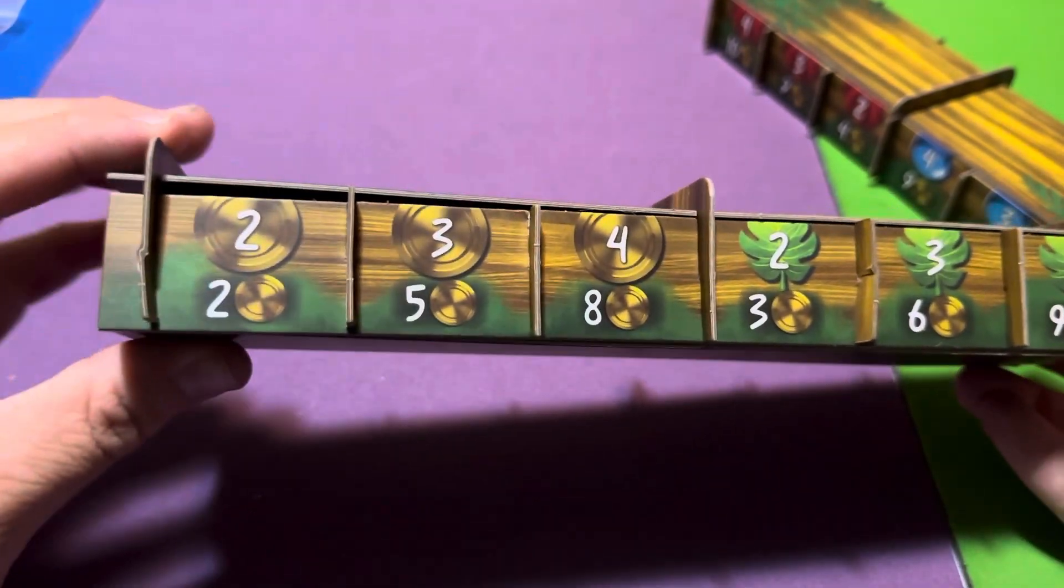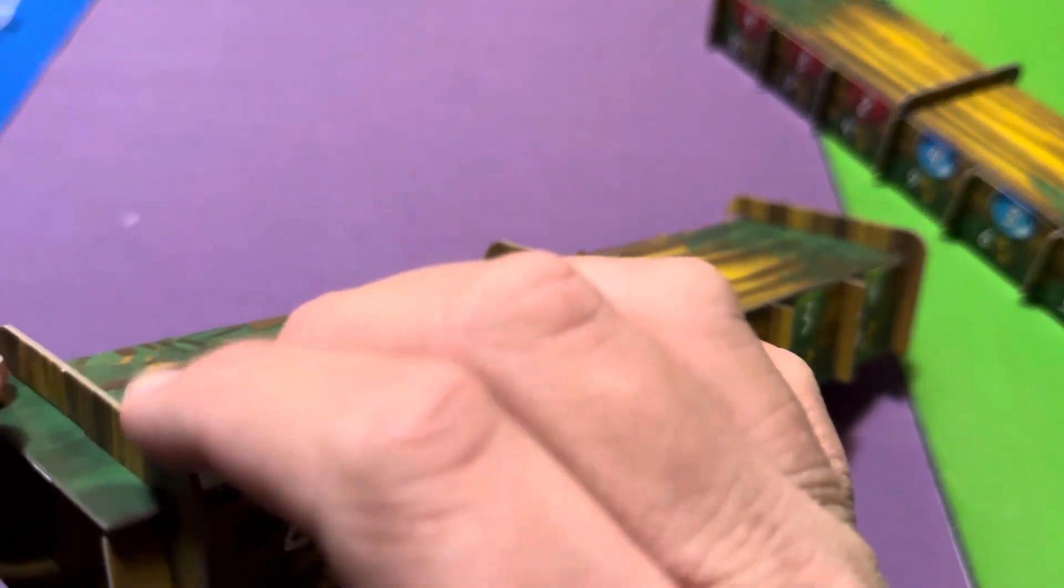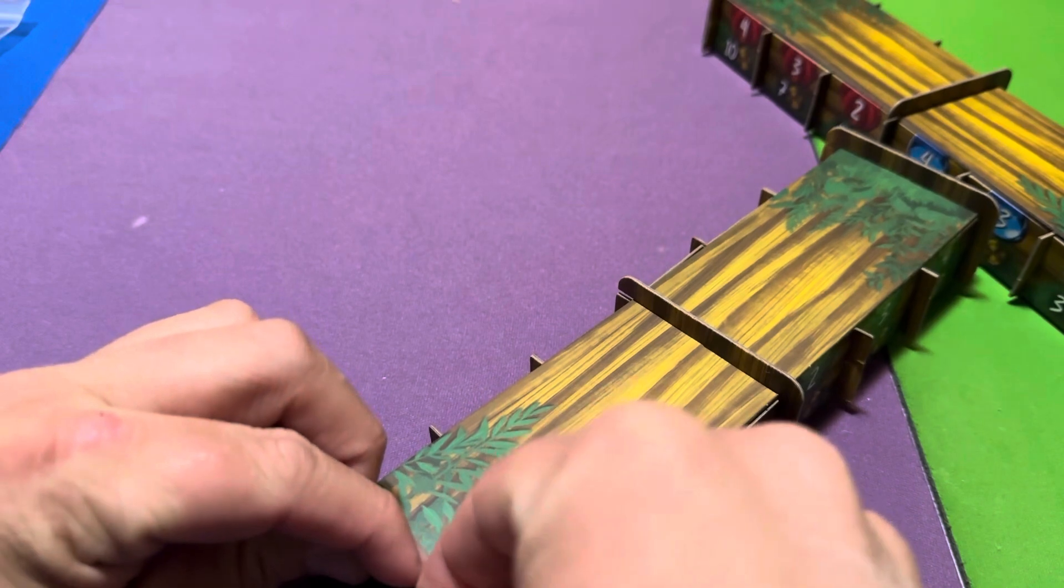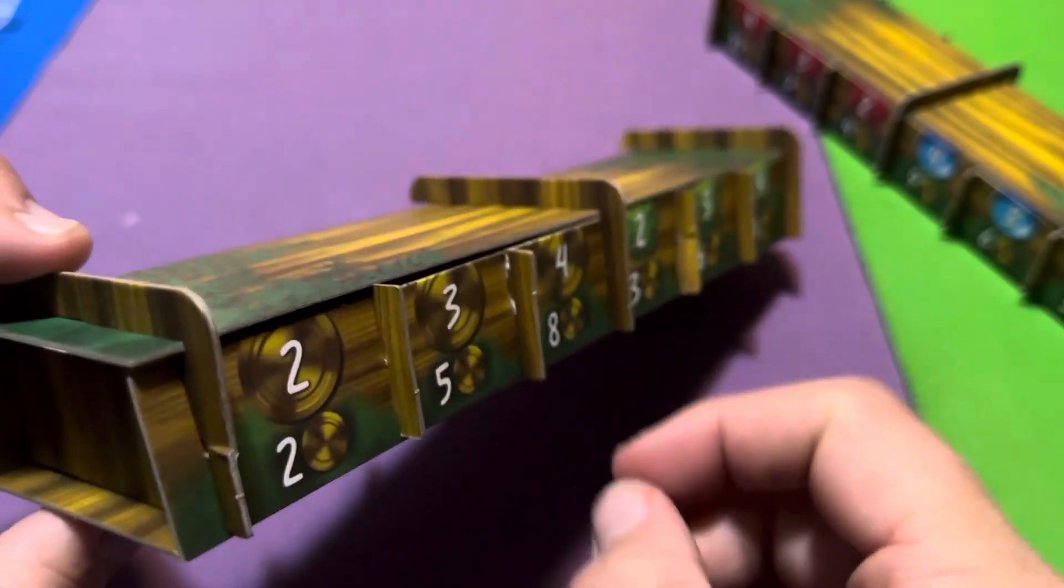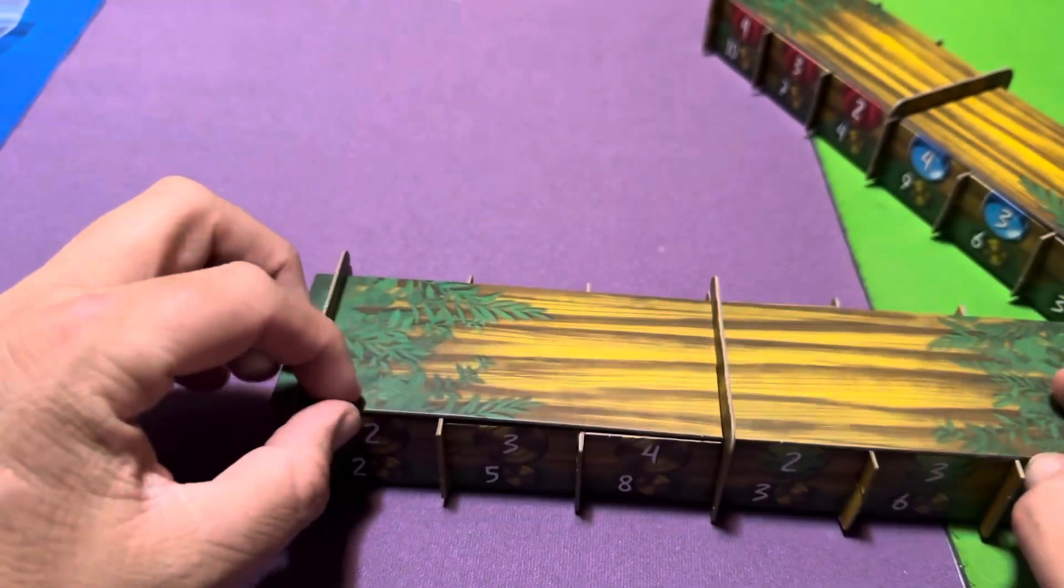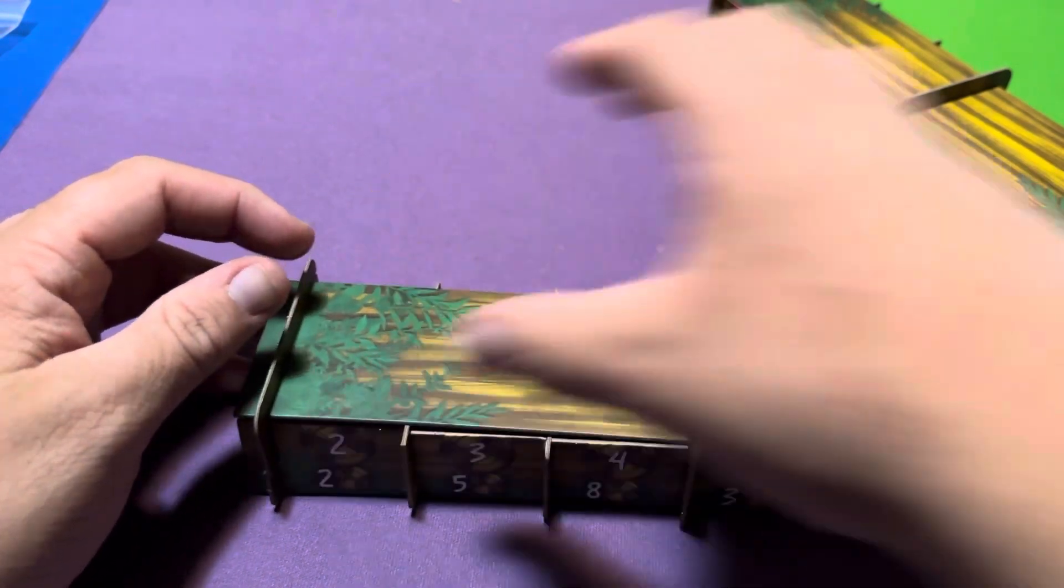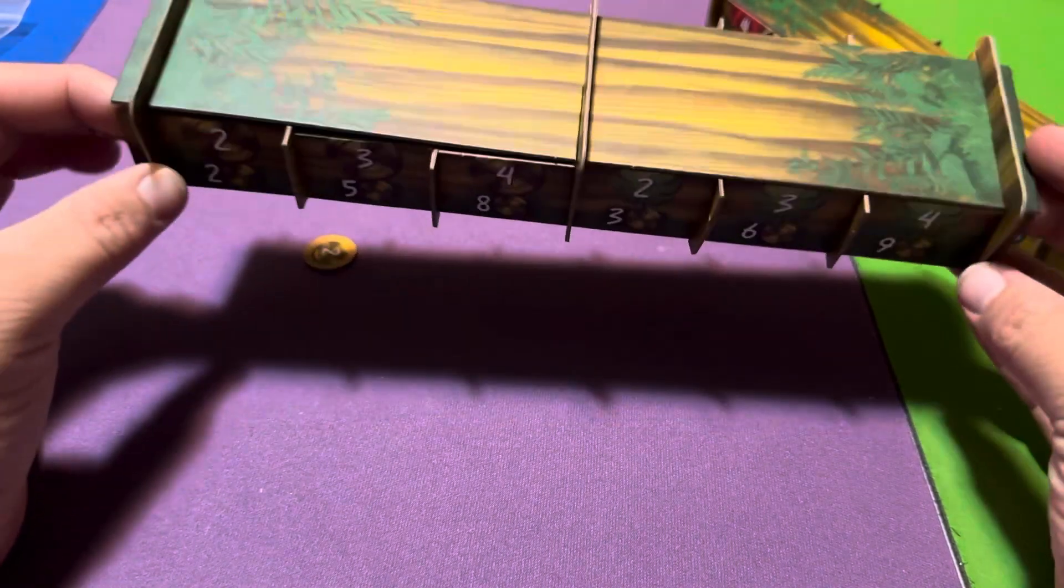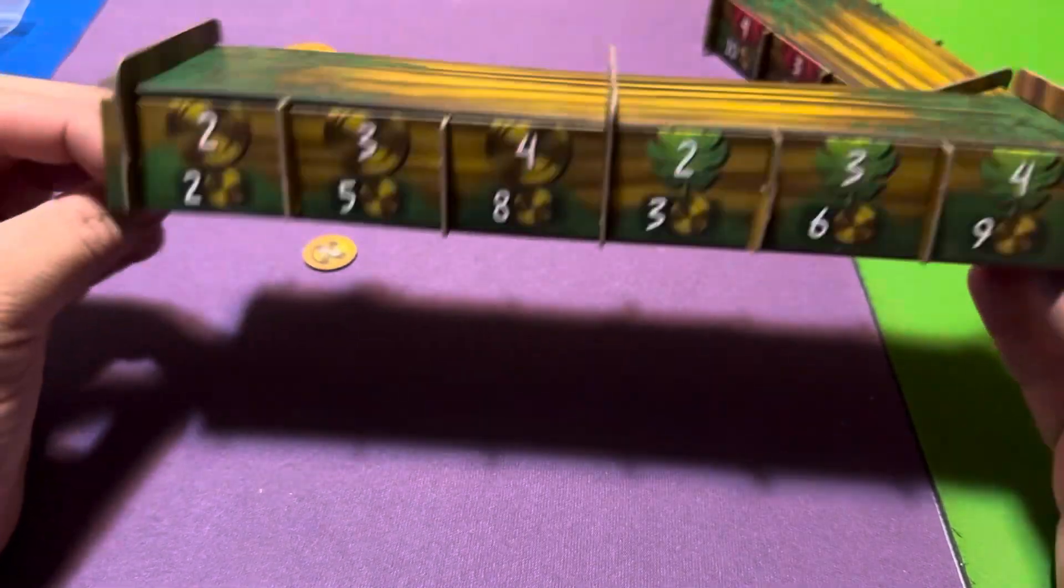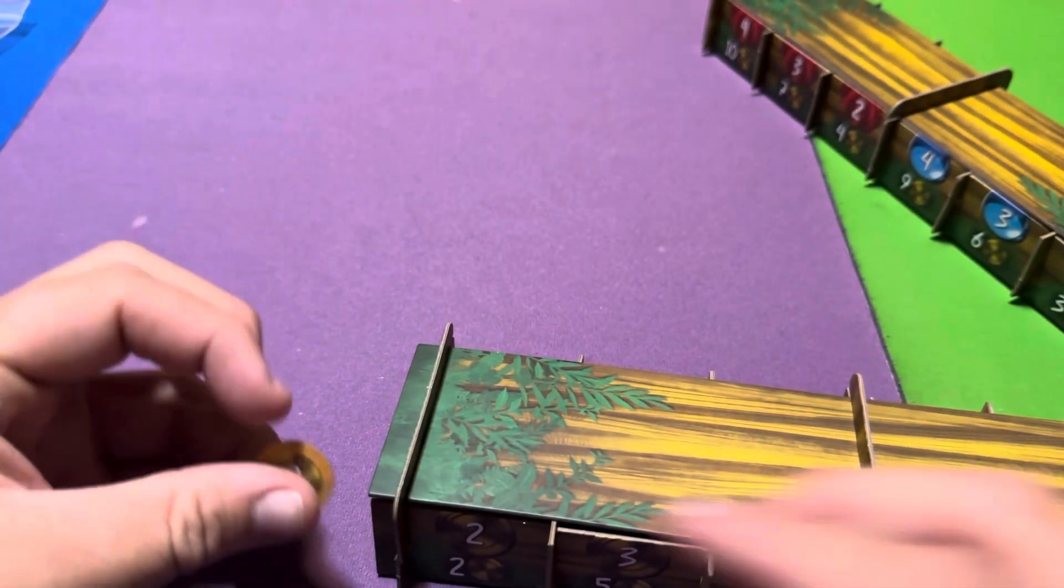And see this one didn't want to go in all the way because of that. So this part's actually not in all the way. So, yeah. Oh well. It's not, it is what it is. It's not horrible. It's just not going to potentially keep everything in. I mean, see? There's already a coin falling out. One fell out.